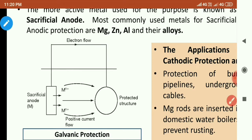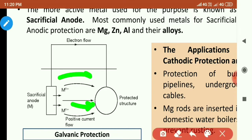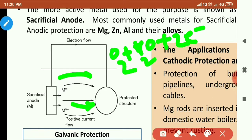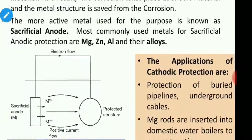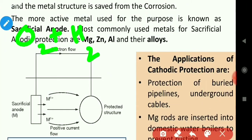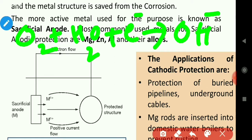The electrons flow from the zinc into the metal structure, and internally, positive current flows towards the metal structure to be protected. At the metal structure, in an alkaline or neutral medium, the cathodic reaction occurs: O₂ + H₂O + e⁻ → OH⁻. This reduction reaction occurs at the metal structure instead of oxidation, so corrosion does not happen there.